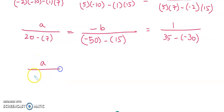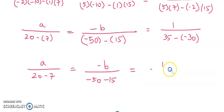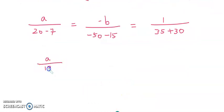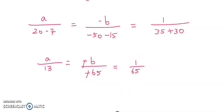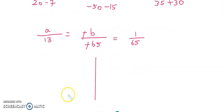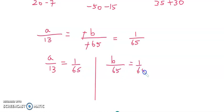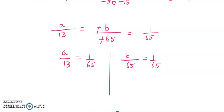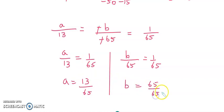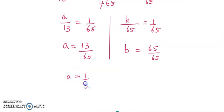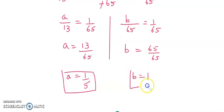So let us take it further. We will get a divided by 20 minus 7 equals to minus b divided by minus 50 minus 15, equals to 1 divided by 35 plus 30. So what will I get here? A divided by 13 equals to minus b divided by minus 65, equals to 1 divided by 65. So a upon 13 equals to 1 upon 65, and b upon 65 equals to 1 upon 65. Therefore a equals to 13 upon 65, which is 1 upon 5, and b equals to 65 upon 65, which is 1.